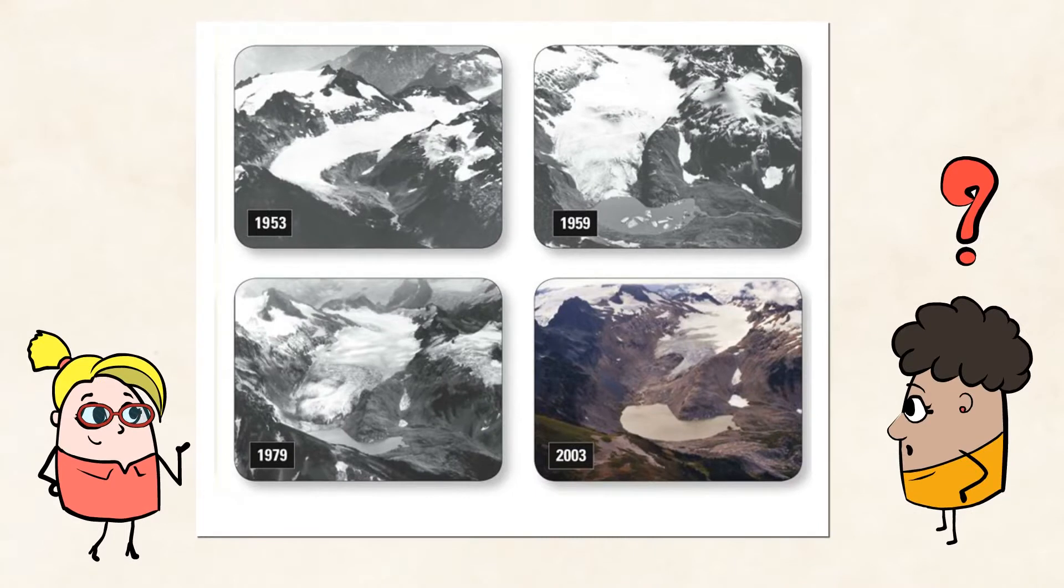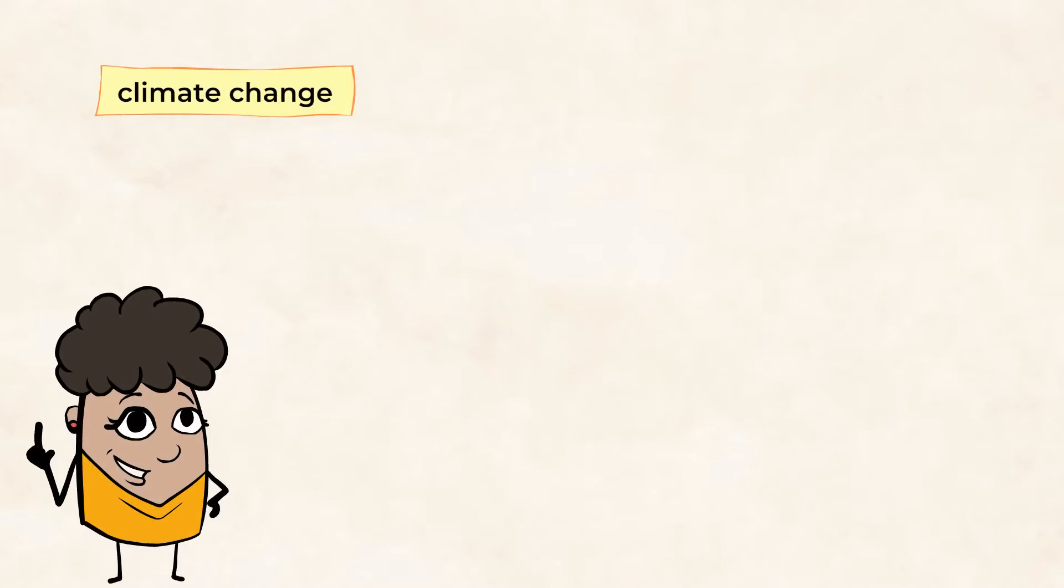This is a picture of a glacier. But what was once a huge glacier in one picture is a tiny one in the other. And this is evidence of climate change.